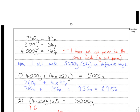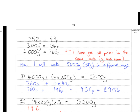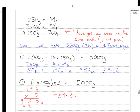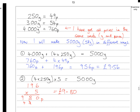Option 2: I worked out that 4 lots of the 250-gram bags make 1,000 grams, so multiplying by 5 gives exactly 5,000 grams. I already worked out that was 196p, so I just multiplied that price by 5, giving £9.80.